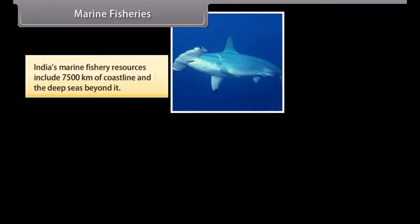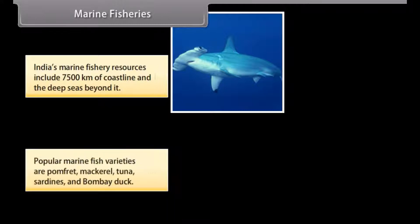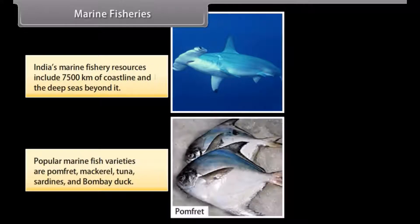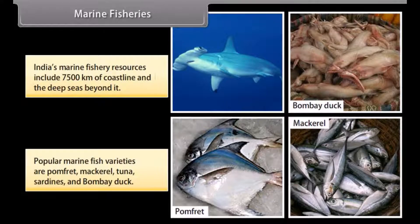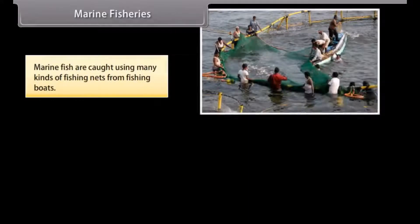India's marine fishery resources include 7,500 kilometers of coastline and the deep seas beyond it. Popular marine fish varieties include pomfret, mackerel, tuna, sardines and Bombay duck. Marine fish are caught using many kinds of fishing nets from fishing boats.